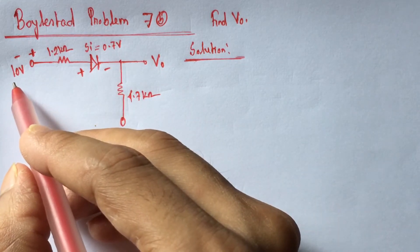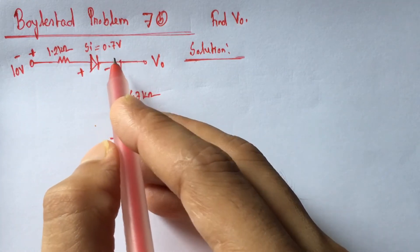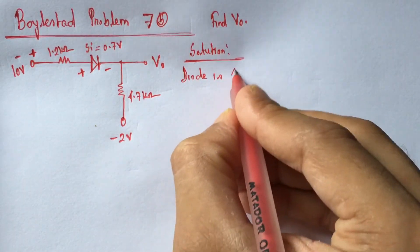So, since 10 volt biasing voltage is greater than the voltage drop of 0.7 volt of the silicon diode, so the diode is on. Diode is on.